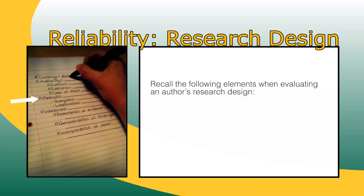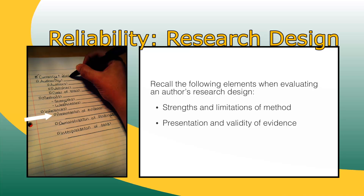Consider the method again. What are the strengths and limitations of the method the author chose, and is there anything he or she could have done to collect better or different data? Do other scholars use similar methods? What other methods could the scholar have used? Ask yourself whether the evidence presented is reliable and valid. Why or why not?